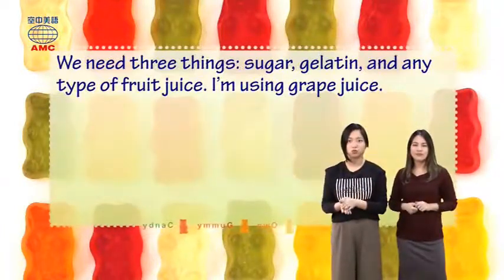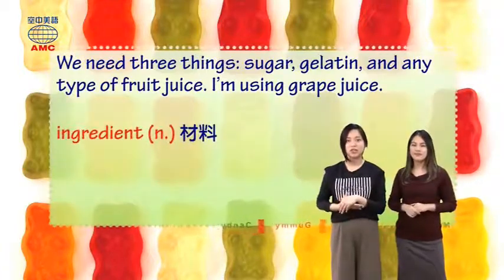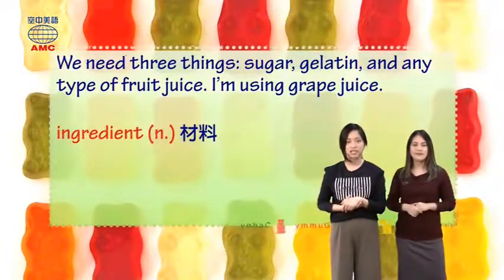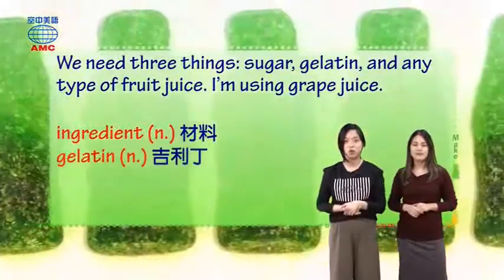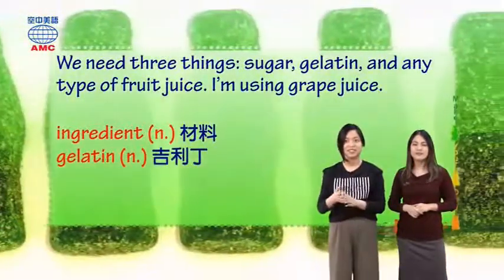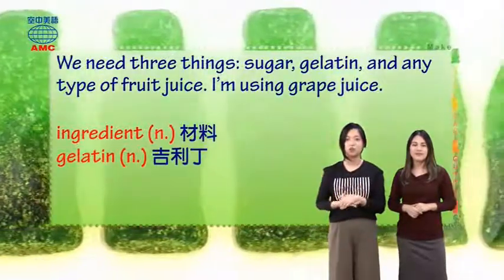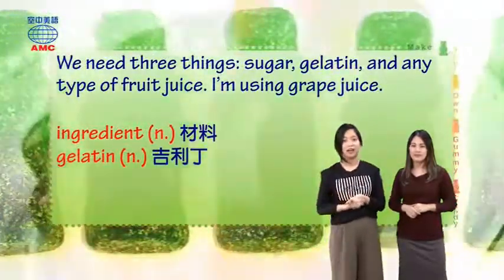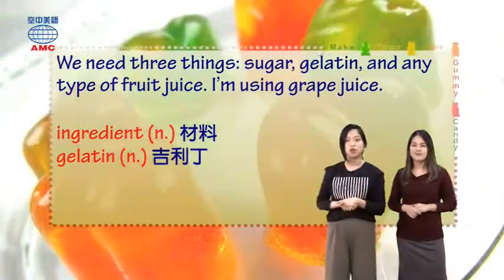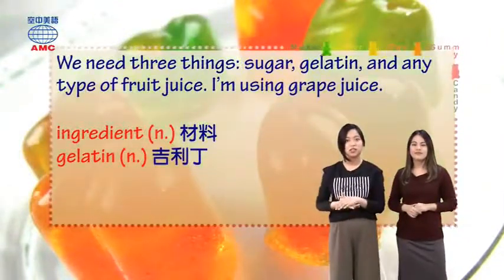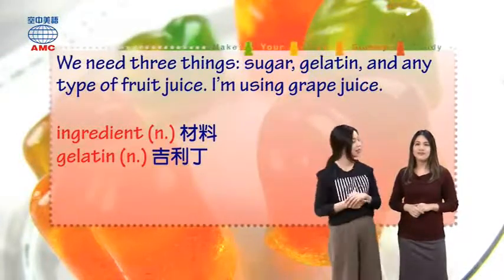当然如果要自己动手做，首先一定要有的就是材料ingredient。所以Ethan就说我们需要三种东西，which are sugar糖，and gelatin，中文就是直接音译叫吉利丁，是一种让东西凝固的材料。然后最后一定要有any type of fruit juice任何一种果汁。Ethan is using grape juice, so he will make purple gummy candy.